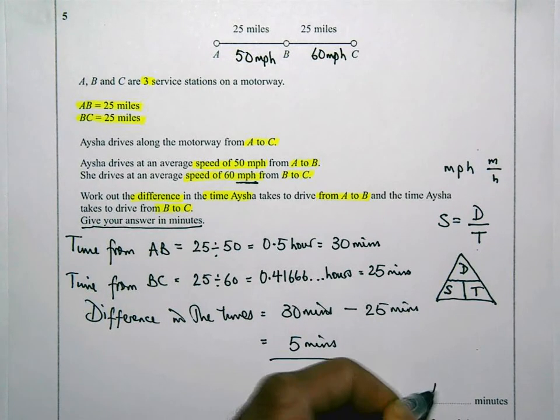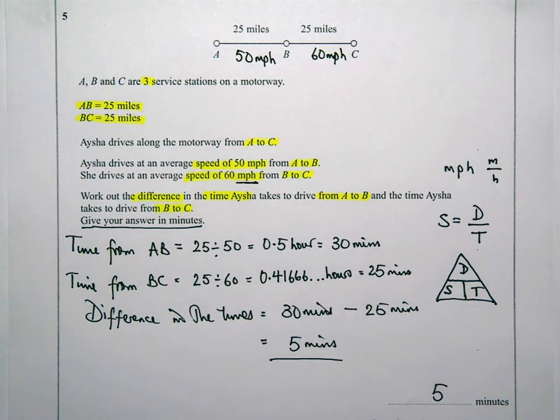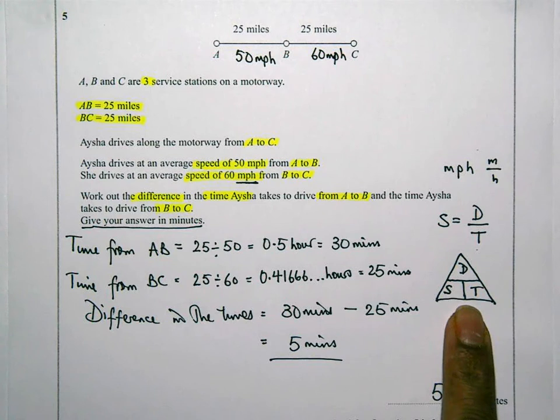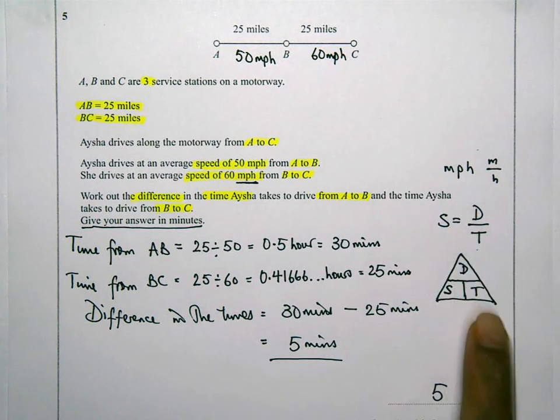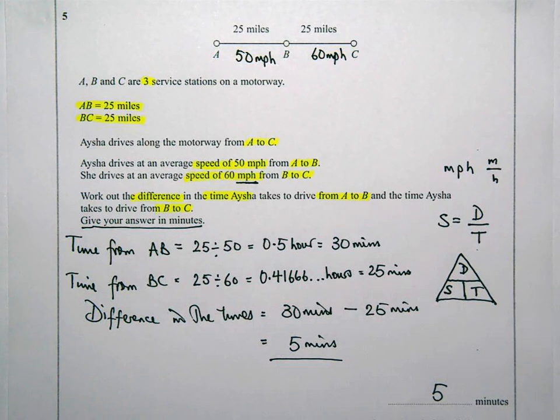And that's 5 minutes. Now this is a pretty straightforward question. I've written every stage of it going through. What you need to know to answer this question is the speed distance time equation. You need to make sure you remember that. And that's something that you could use and apply relatively easily.